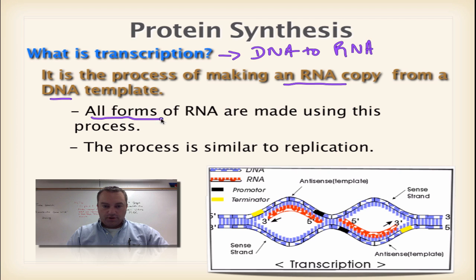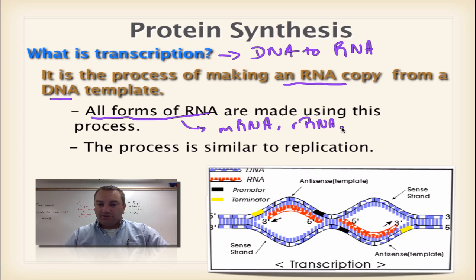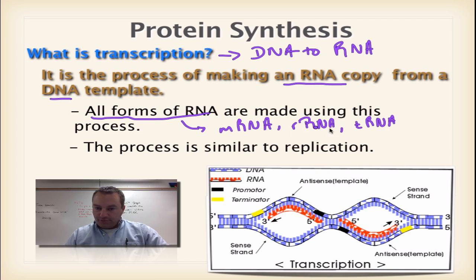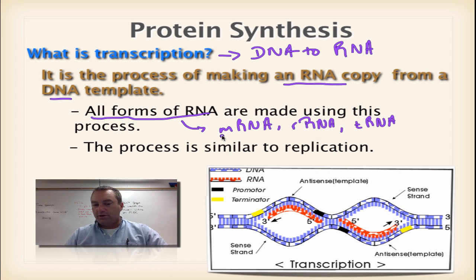All forms of RNA are made during this process. We have mRNA, which stands for messenger RNA; rRNA, which is ribosomal RNA found inside the ribosome; and tRNA, which is transfer RNA, used during translation. All three of these are made during transcription, but most of the time when we talk about transcription, we just say we're making RNA.